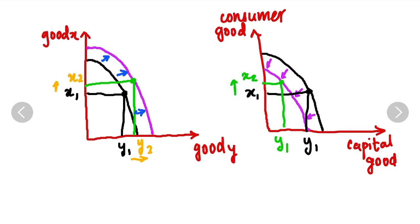Here you can see the consumer good will increase and the capital goods will decrease. There will also be PPC curves where points are in different positions and you will have to identify whether it is a good or bad situation. For example, if they ask you to identify what is happening at the blue point in the country, it means the country is not making use of its resources efficiently. If the point is on the curve, it means it is doing perfectly. And if it is outside the curve, it is not really possible for the country to achieve that point.